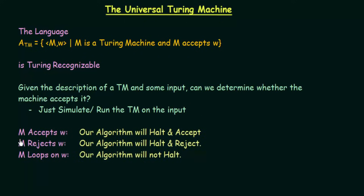How can we determine whether the machine accepts it? Very simple — just simulate or run the Turing machine on the input. Then we can know whether it will accept, reject, or loop. This universal Turing machine will behave exactly like the Turing machine whose description we pass to it. If Turing machine M accepts W, then our algorithm will halt and accept. If M rejects, our algorithm will halt and reject. And if M loops on W, then our algorithm will not halt. That is why we call it Turing recognizable and not decidable.